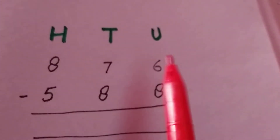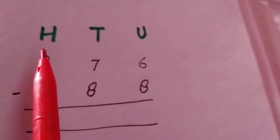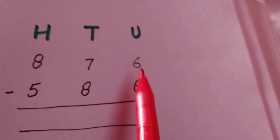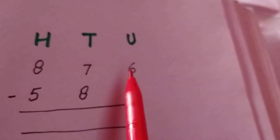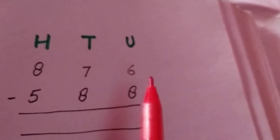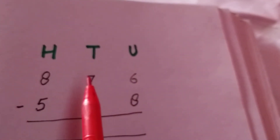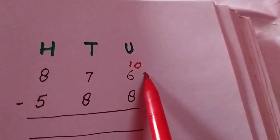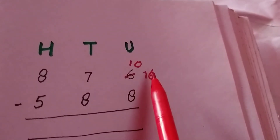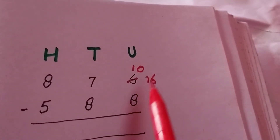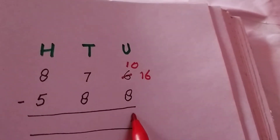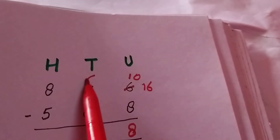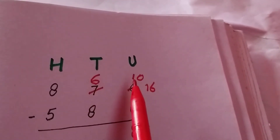Now there is a bigger value with units, tens, and hundreds. Six and eight — six is smaller than eight. It borrows from seven. Seven gives us ten, so it becomes sixteen. We subtract eight from sixteen. The answer is eight. But there is not seven remaining — it's now six.